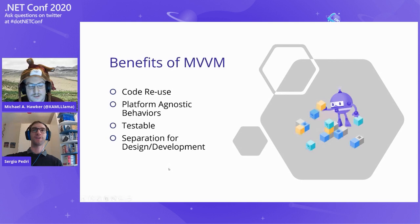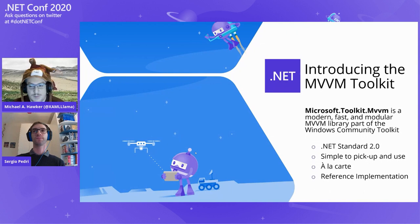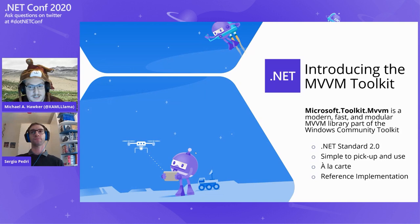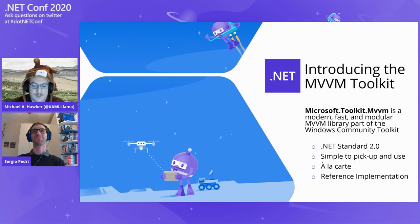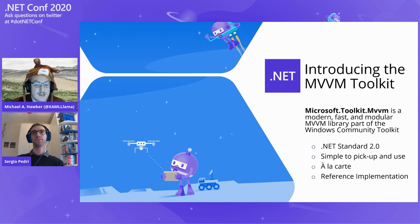It's our great pleasure to introduce the MVVM Toolkit. It's a modern, fast, and modular MVVM library that is part of the Windows Community Toolkit, but it's .NET Standard based, so it works for whatever apps you're building — UWP, WPF, Xamarin, Blazor, Uno, and more. We want it to be simple to pick up and use, and you can pick any piece of the library you want. It's really meant to be a reference implementation implementing all the interfaces alluded to in the base class library that you'd expect to need for building with the MVVM pattern.